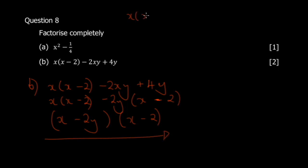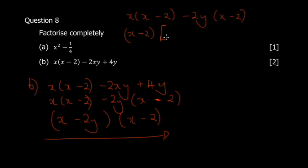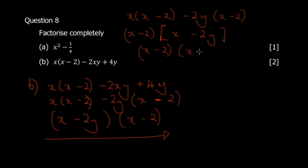To clarify why we choose these brackets: x minus 2 is common in both pairs — this is x minus 2, and this is x minus 2. You're left with (x minus 2) multiplied by (x minus 2y). Collect the coefficients into one bracket, put the common bracket as is. Don't force brackets to match — be systematic and make sure your signs are consistent.